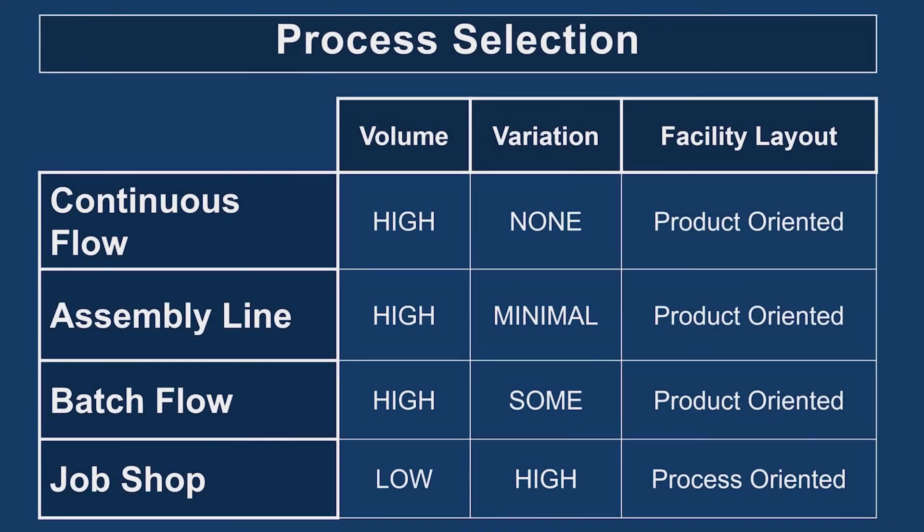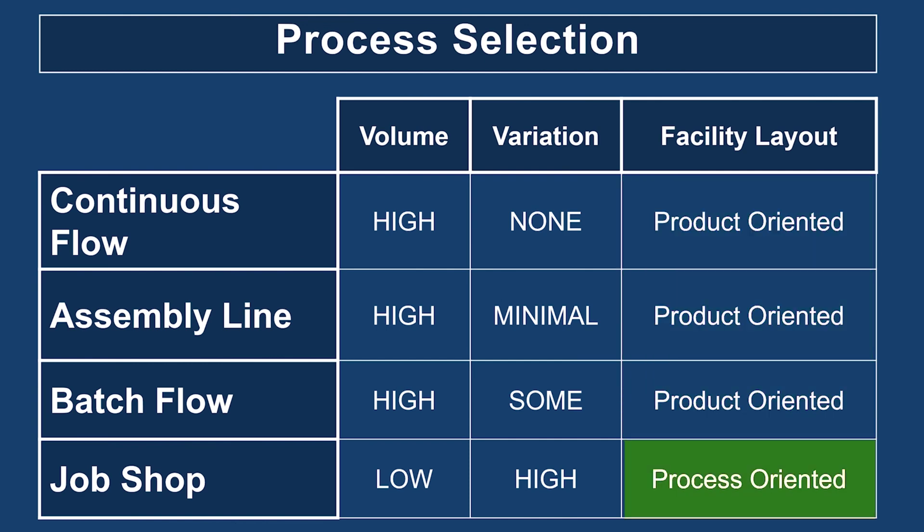Also worth noting: continuous flow, assembly line, and batch flow are more specific to product-oriented layouts, while job shop is more specific to a process-oriented layout. So if you already have your layout chosen, you can narrow your process selection based on the type of layout you've already selected.